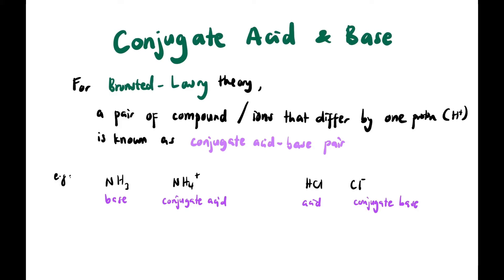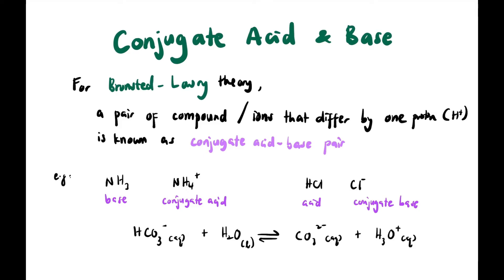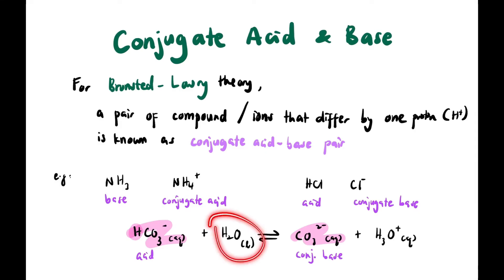For the equation HCO₃⁻ + H₂O ⇌ CO₃²⁻ + H₃O⁺: the pair HCO₃⁻/CO₃²⁻ — HCO₃⁻ has an extra H⁺ compared to CO₃²⁻, so HCO₃⁻ is the acid and CO₃²⁻ is its conjugate base. For the pair H₂O/H₃O⁺ — H₃O⁺ has an extra H⁺ compared to H₂O, so H₂O is the base and H₃O⁺ is its conjugate acid.